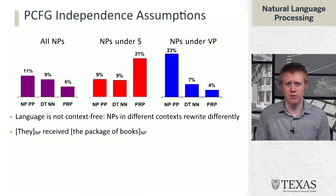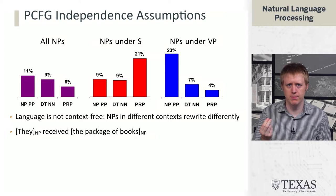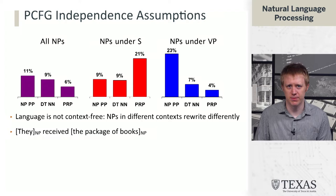In this segment we're going to talk about the independence assumptions underlying PCFGs and why these maybe aren't so good. We set up this idea of building a PCFG by estimating a grammar from a tree bank and then parsing with that grammar. If you do this it turns out you actually build a pretty bad parser, because context-free grammars are too context-free.